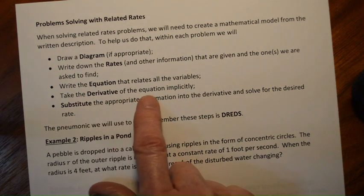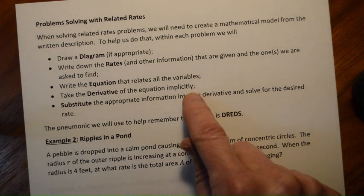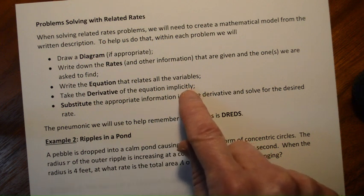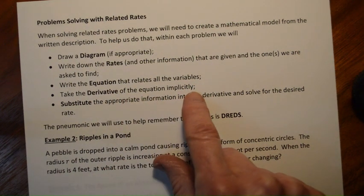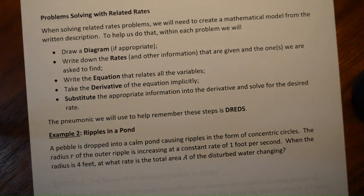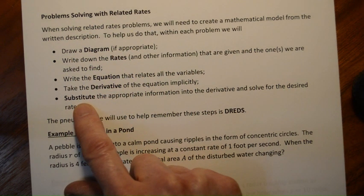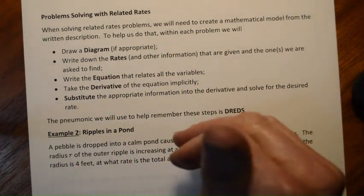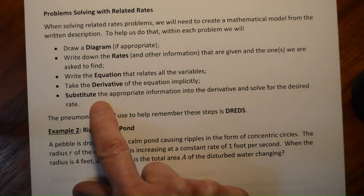We're going to take the derivative of the equation implicitly — what we mean is that every time we take the derivative of a variable it implicitly is a function of t, so we'll always have dx/dt or dh/dt or dv/dt, whatever that is. The last thing — and it's so tempting to do this earlier — is finally to substitute the information into the derivative and solve for the desired rate. This is where you're going to make your mistake, because it's very tempting to put it in earlier. If we do that we often just end up with zero because we've filled in all these constants.